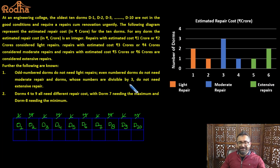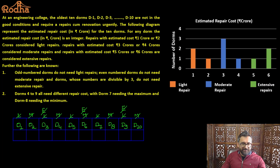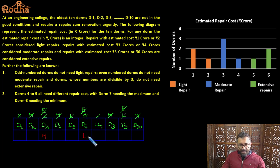DOMs whose number is divisible by 3 do not need extensive repair — that means DOMs 3, 6, and 9 do not need extensive repair. Combining these constraints: DOM 3 does not need extensive or light repair, so it must need moderate repair. DOM 6 does not need extensive or moderate repair, so it must need light repair. DOM 9 cannot need light or extensive repair, so it must need moderate repair.